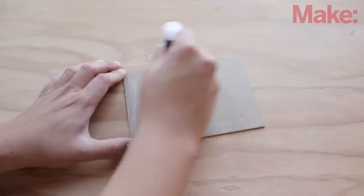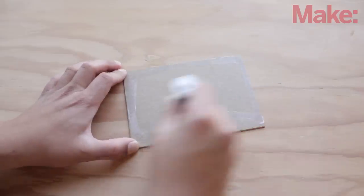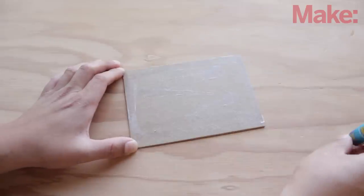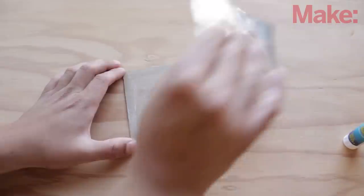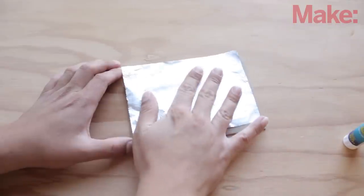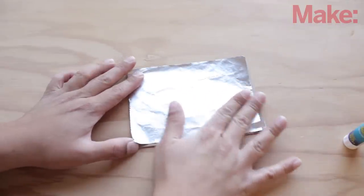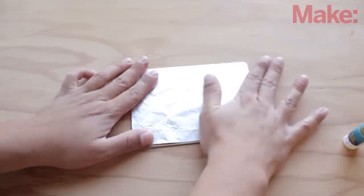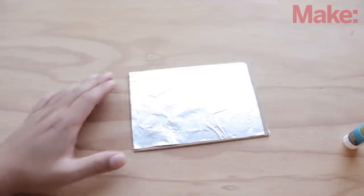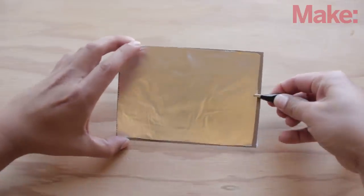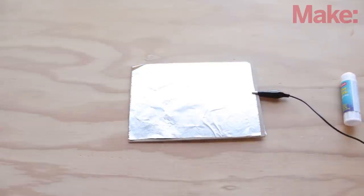Now, let's build the capacitive sensor. It works by detecting the change in capacitance, or the ability to hold an electric charge, of a metal film when it comes in proximity with another object. To build the sensor, cut a rectangle out of cardboard, and cover one side with aluminum foil. Next, attach an alligator clip to the foil. That's it. Seriously, that's it.